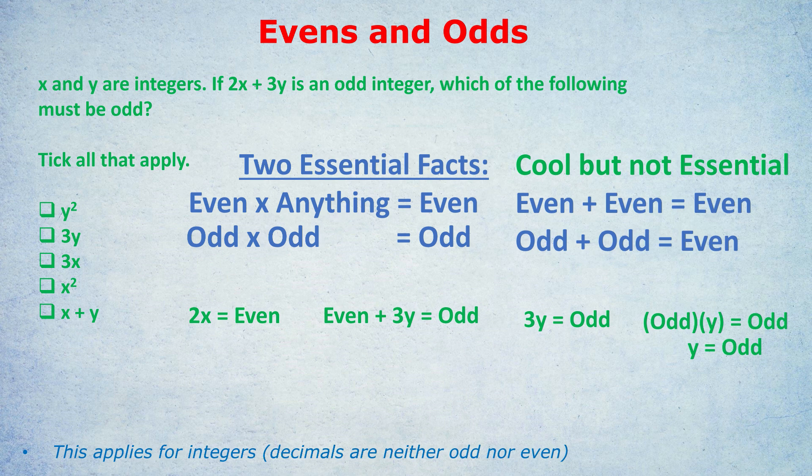Now that we know Y is odd, will Y squared definitely be odd? Yes, because Y squared — if Y is odd — is an odd times itself, an odd times an odd, which will always be odd. That's the second essential rule. What about B, 3Y? Is that definitely odd? Yes, because 3 is an odd number, so odd times Y, which is odd, equals odd.